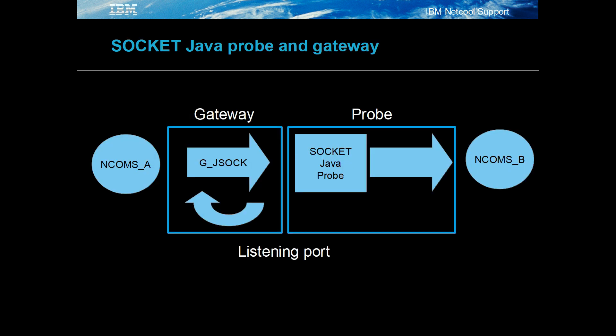It will discuss the configuration of the Socket Java Probe and Gateway and how to increase the Gateway's performance. In this example, the Socket Java Gateway is configured to send events from ncoms_A to the Socket Java Probe, which is connected to the object server ncoms_B.